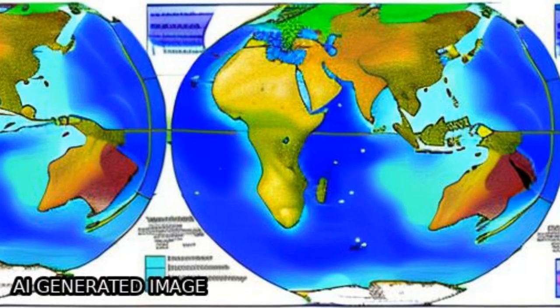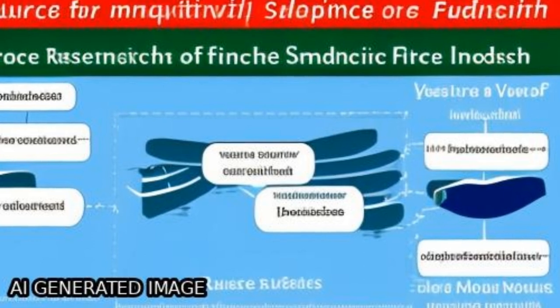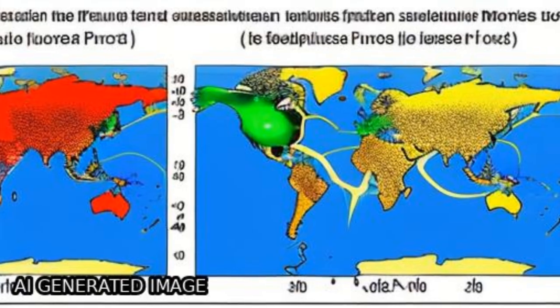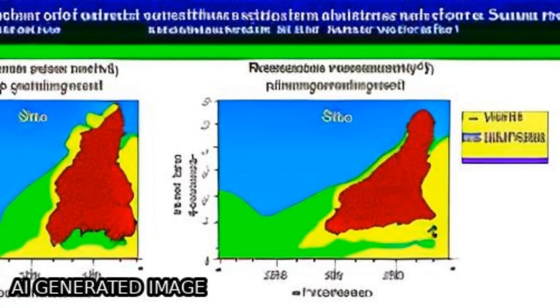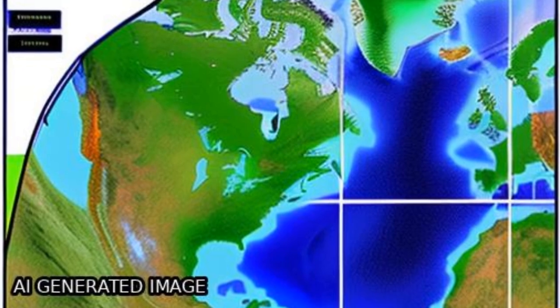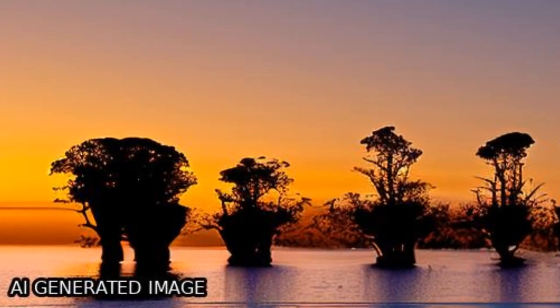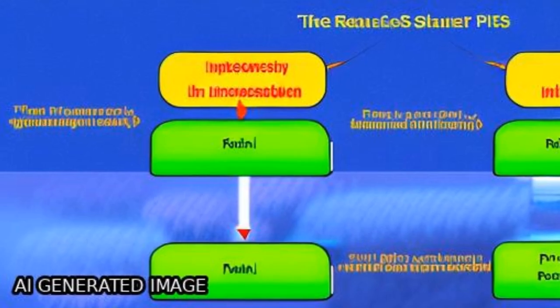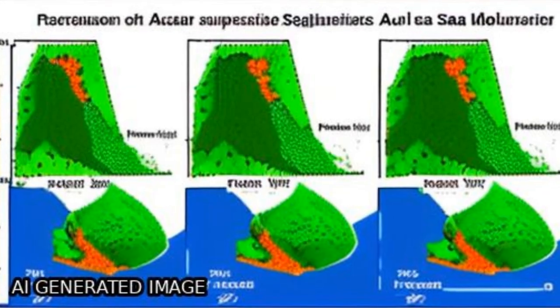The improved SSS well-captured spatiotemporal patterns of SSS for both low and high salinity water in all five regions, and the proposed approach can be used operationally to improve the global SMAP SSS product, including other coastal areas and near-polar regions in the future.